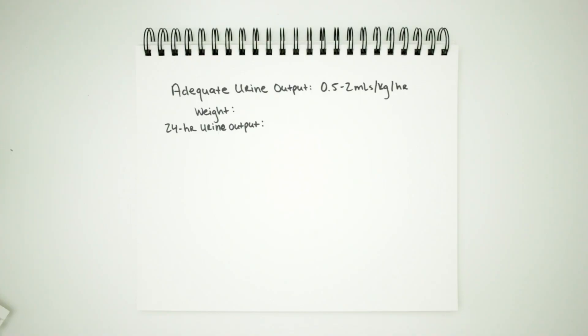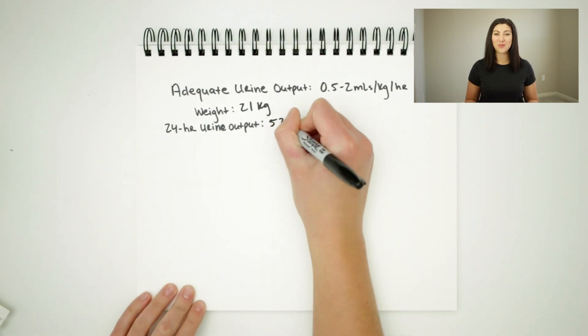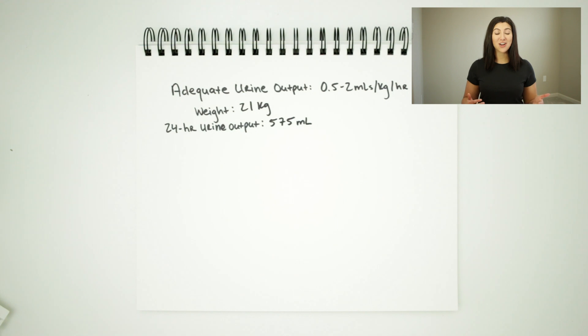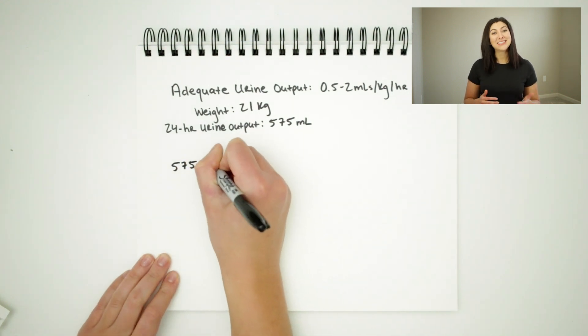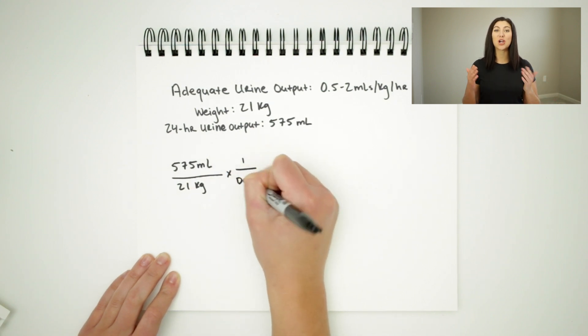The final formula you'll need to know is what an adequate urine output is for your patient's weight. An adequate amount of urine output is 0.5 to 2 milliliters per kilogram per hour. The most accurate way to obtain this information is to look at your patient's total urine output over a 24-hour period. We'll work this problem through together assuming that our patient is 21 kilograms and has voided 575 milliliters over a 24-hour period. When we plug in these numbers and make sure that our conversion factors are able to cancel out, we see that we have a urine output of 27.4 milliliters per kilogram per day.